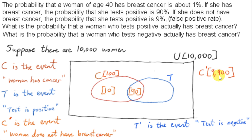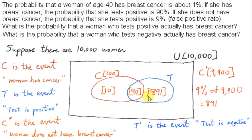Of those women that do not have breast cancer, 9% of them test positive. 9% of 9,900 is 891. So there are 891 elements in this region — on average, out of 10,000 women, 891 do not have cancer but test positive. They may end up thinking they have cancer when they don't.